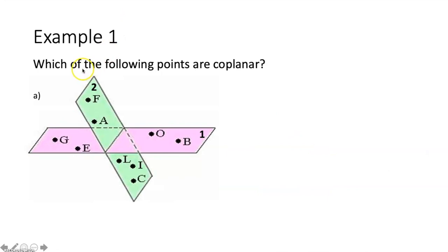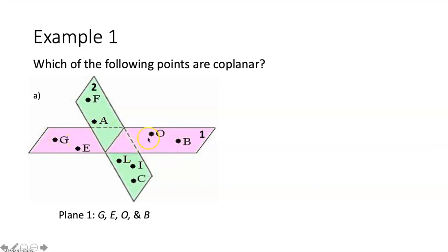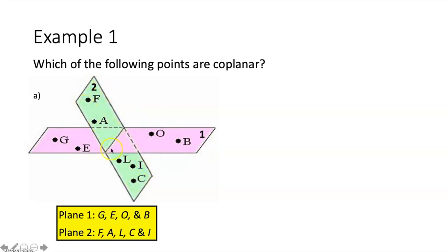Now you got the vocab — it's example time. Example one asks which of the following points are coplanar. We're looking at a figure with two planes. In plane one, points G, E, O, and B all exist within that pink plane, so those points would all be coplanar. In plane two, points F, A, L, I, and C are all within that green plane, so those points would all be coplanar as well.